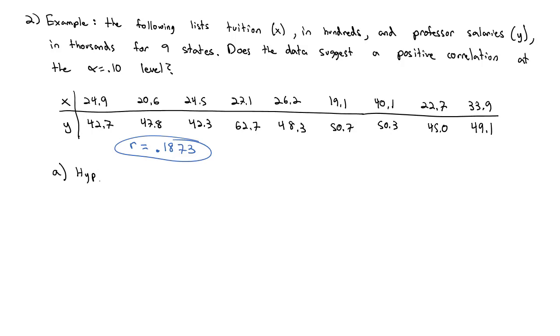First, the hypotheses. My null hypothesis is that there is no relationship, that rho equals 0. The alternative hypothesis, we're trying to show there's a positive relationship, that it's greater than 0, which means if I draw a picture, it's going to be greater on the right tail test. This is a right tail test and we'll keep that in mind when we do the command for the p-value.